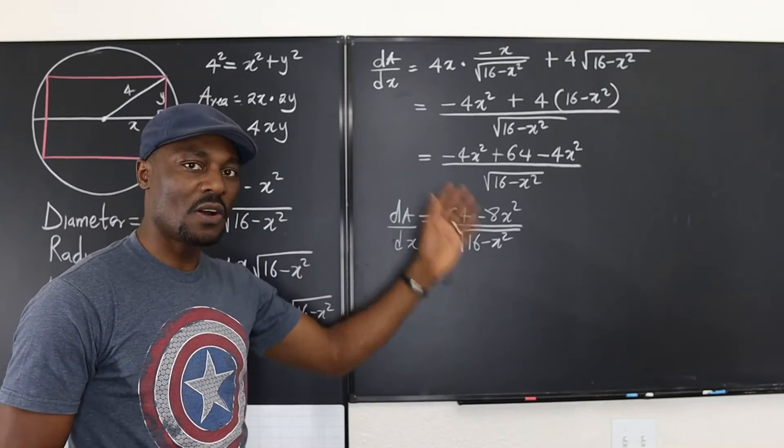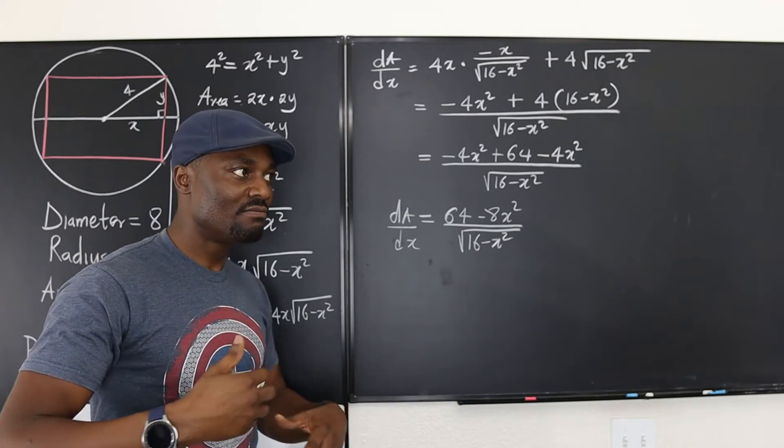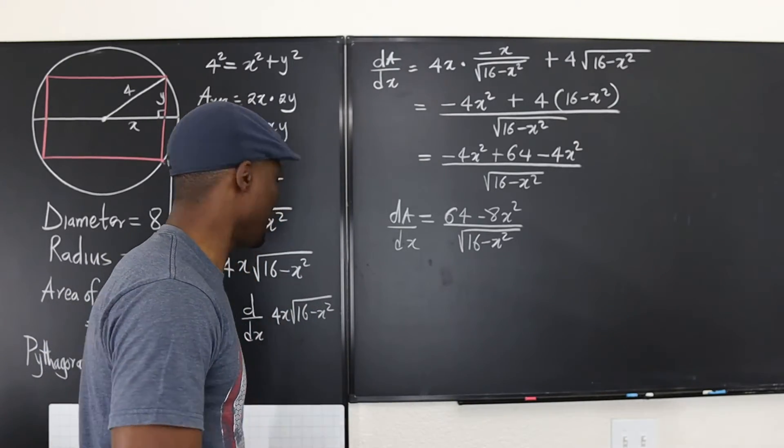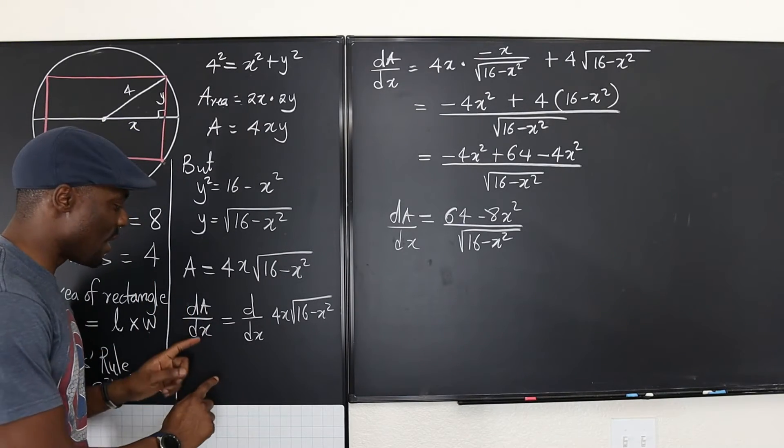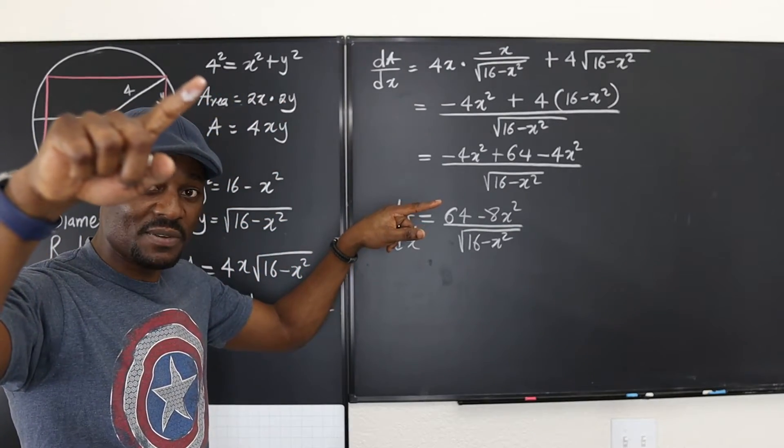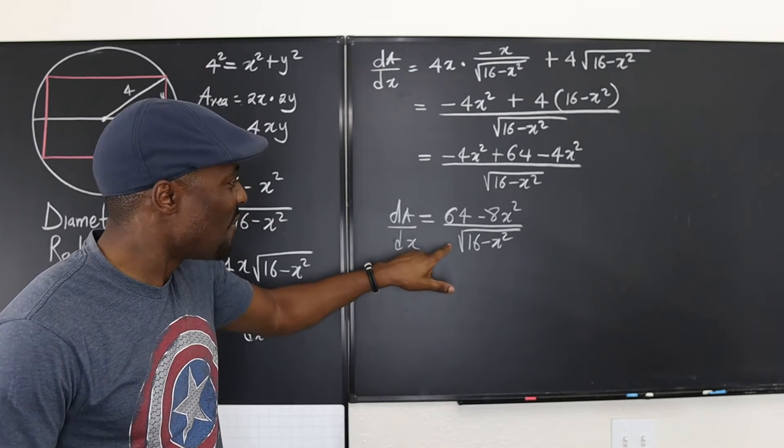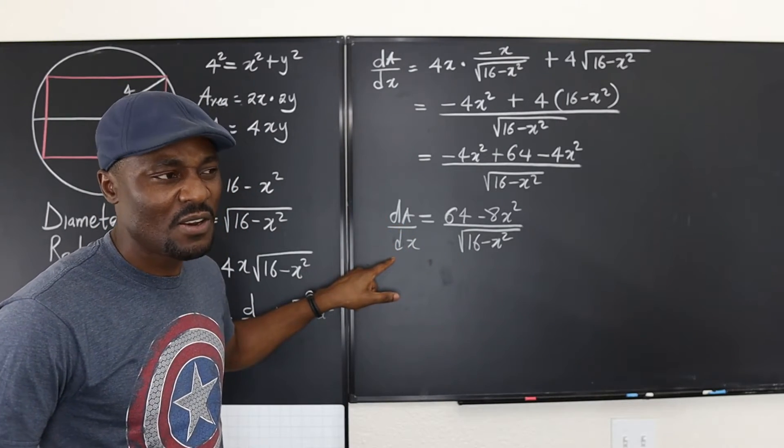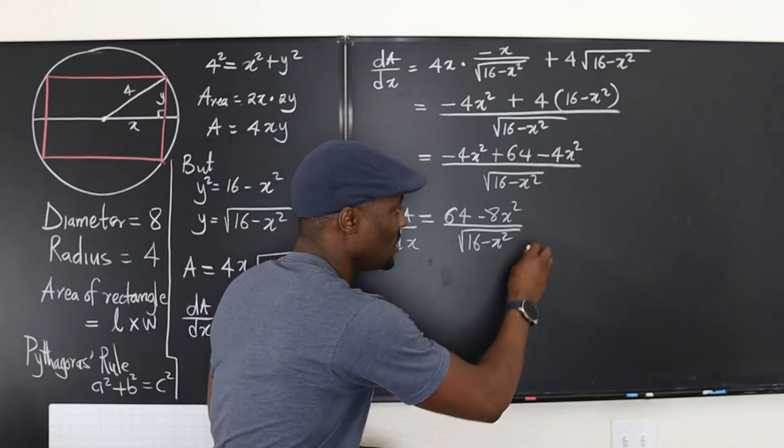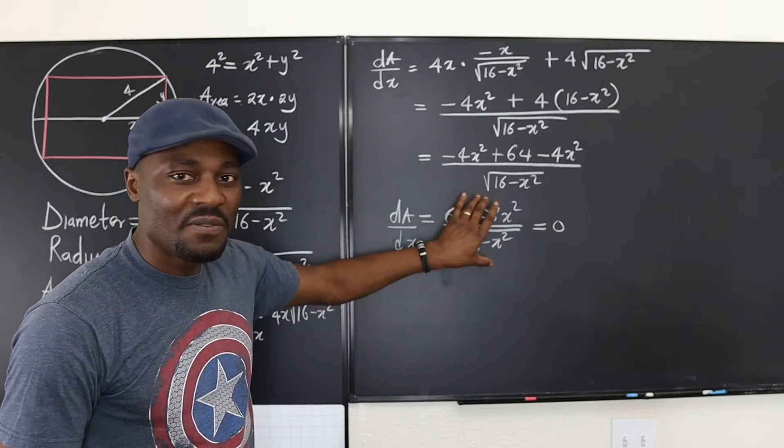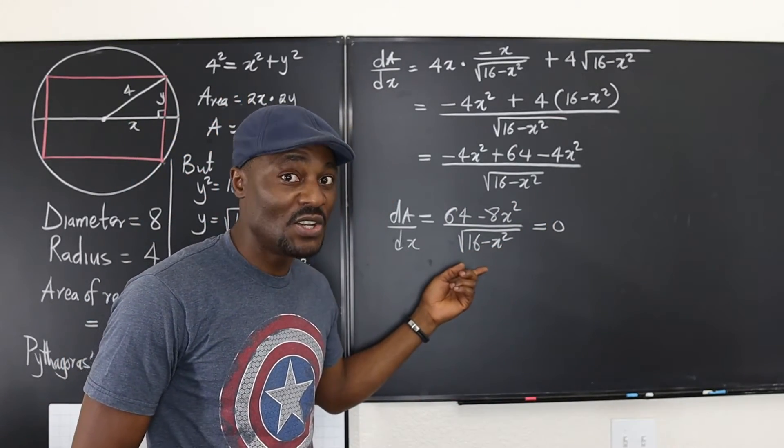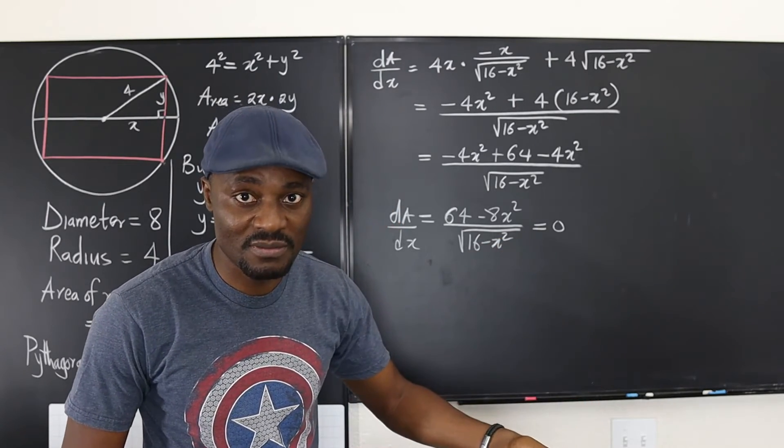And this is going to be equal to negative 4x squared plus 4 times 16 is 64 minus 4x squared. And all of that over the square root of 16 minus x squared. One more step. And that step is this. This is equal to, this and this will become 64 minus 8x squared. I was wishing they'd cancel out. They didn't cancel out. Don't get tempted when it looks promising. Don't say yes. That's the ticket. Don't do it. Follow the math. You'll always be right. And divided by square root of 16 minus x squared. That's dA/dx.